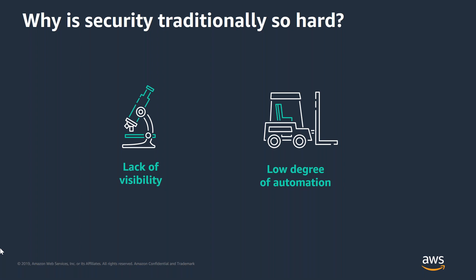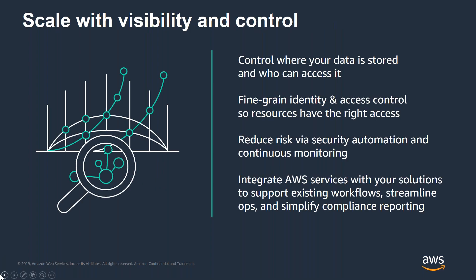The combination of lack of visibility and low degree of automation compromises an organization's ability to move quickly and effectively secure their on-premises infrastructure. With AWS, you control where your data is stored, who can access it, and what resources your organization is consuming at any given moment. Fine-grained identity and access controls combined with continuous monitoring for near real-time security information ensures that the right resources have the right access at all times.